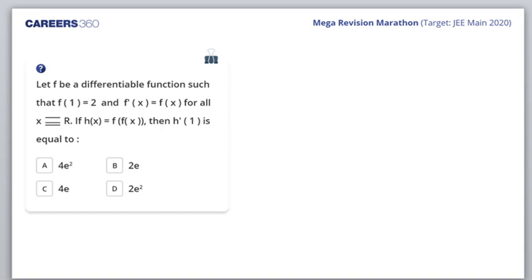Next question: Let f be a differentiable function such that f(1) = 2 and f'(x) = f(x) for all x belonging to ℝ. For all x belonging to ℝ, h(x) = f(f(x)) - a composite function. Find h'(1).